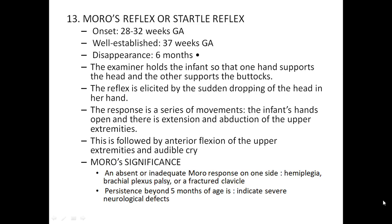Moro reflex: onset is between 28 to 30 weeks of gestation, well established by 37 weeks, and disappears by 6 months. The examiner holds the infant with one hand supporting the head and another supporting the body, then elicits the reflex by sudden dropping of the head. The response consists of symmetric movements with the infant's hands opening and extension and abduction of the upper extremities. Absence or inadequate Moro response on one side indicates hemiplegia, brachial plexus injury, or a fractured clavicle.